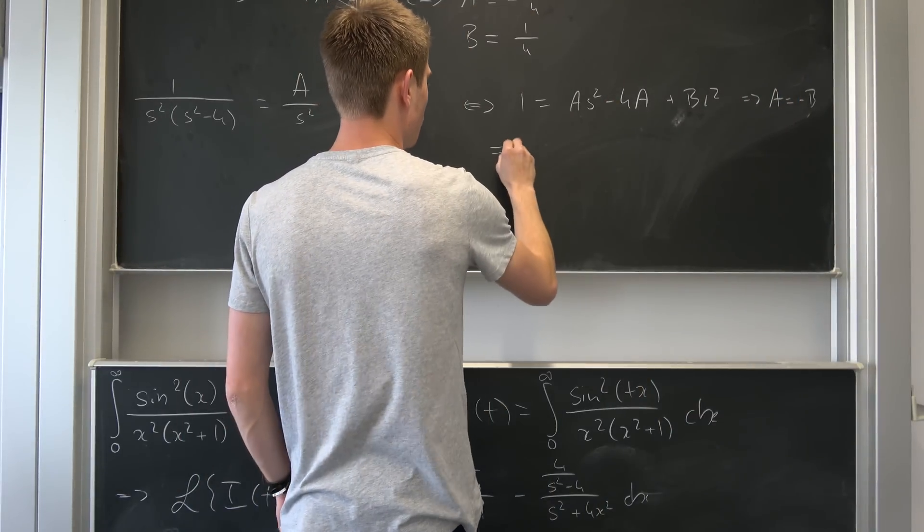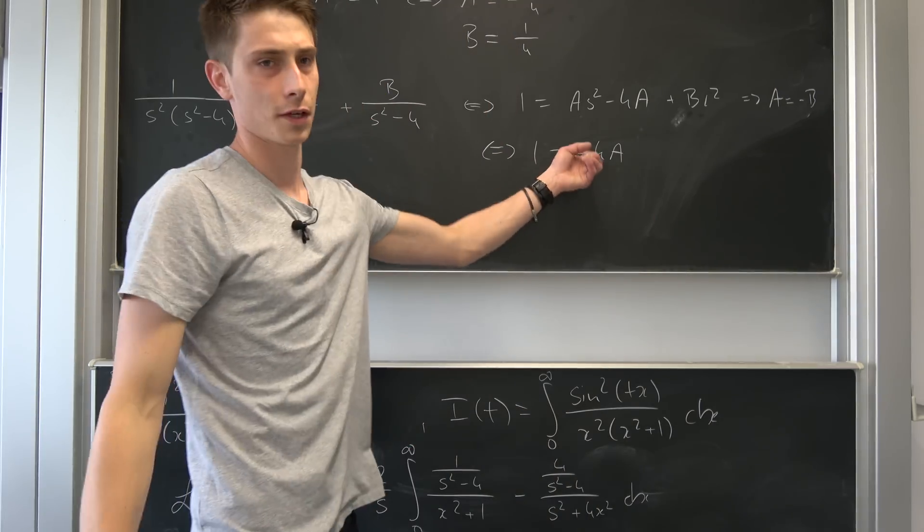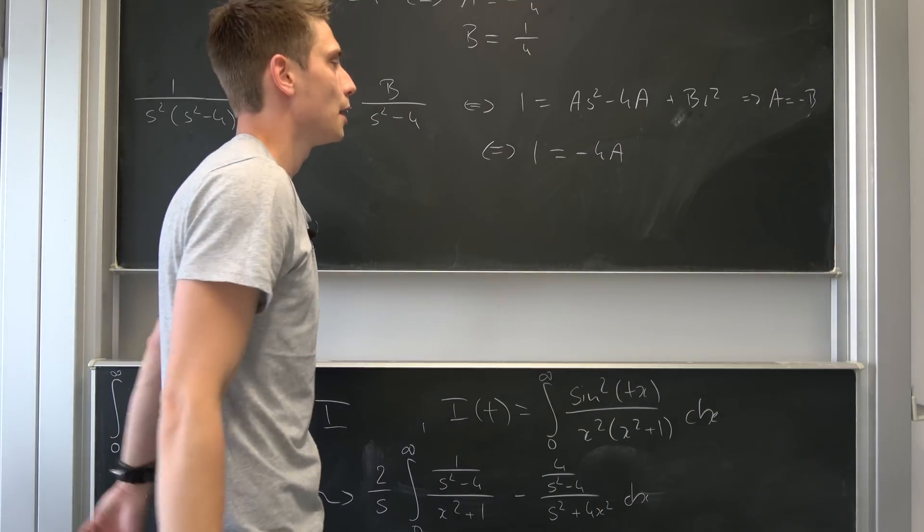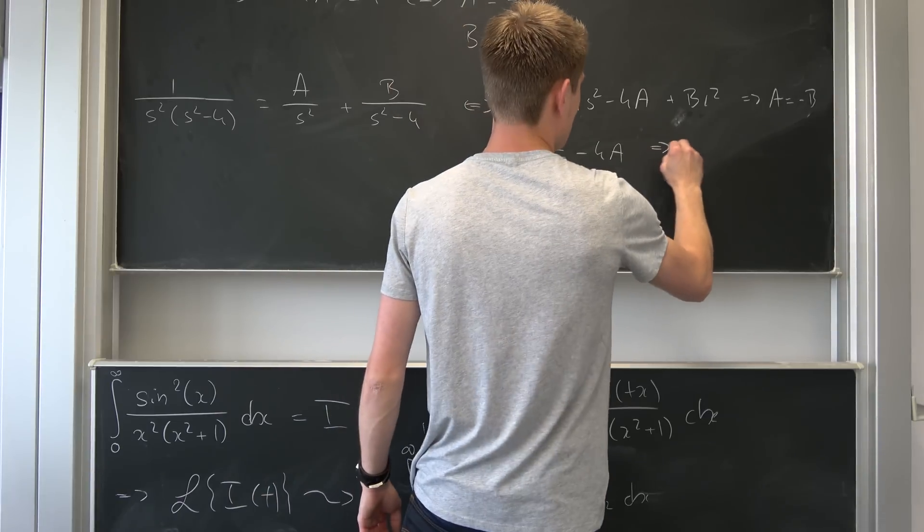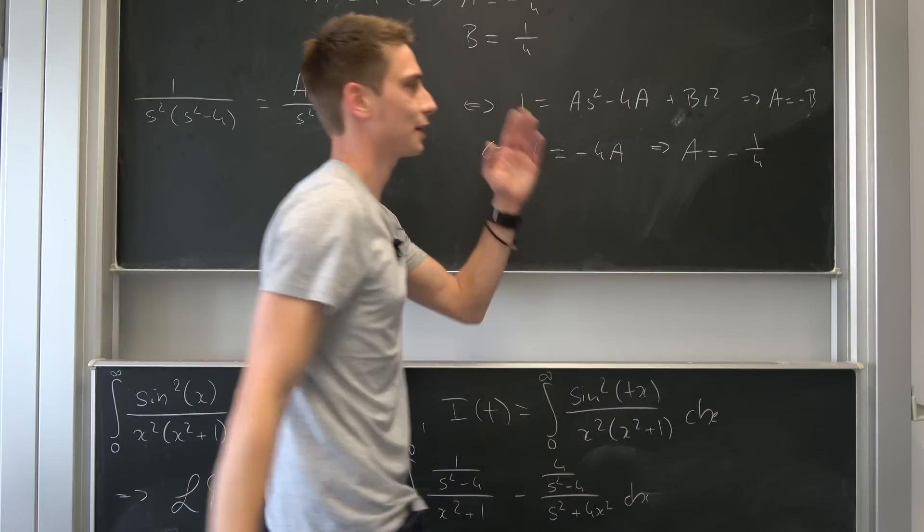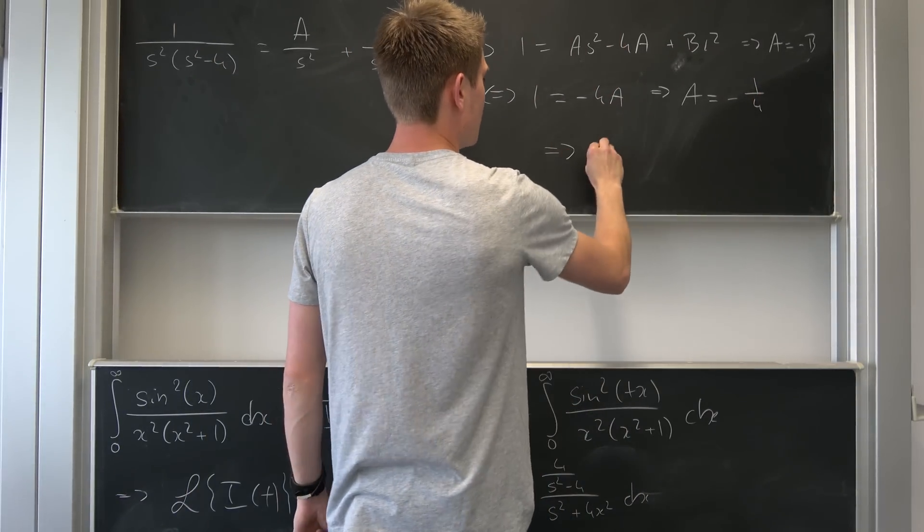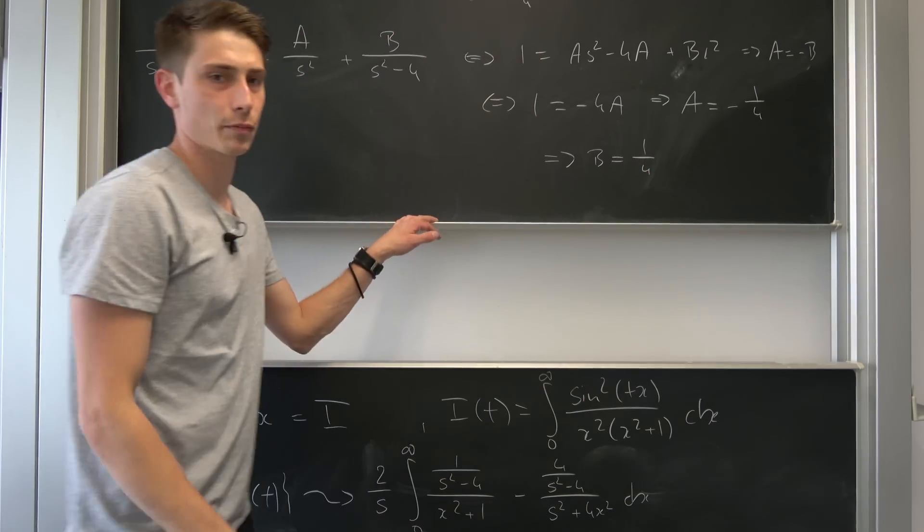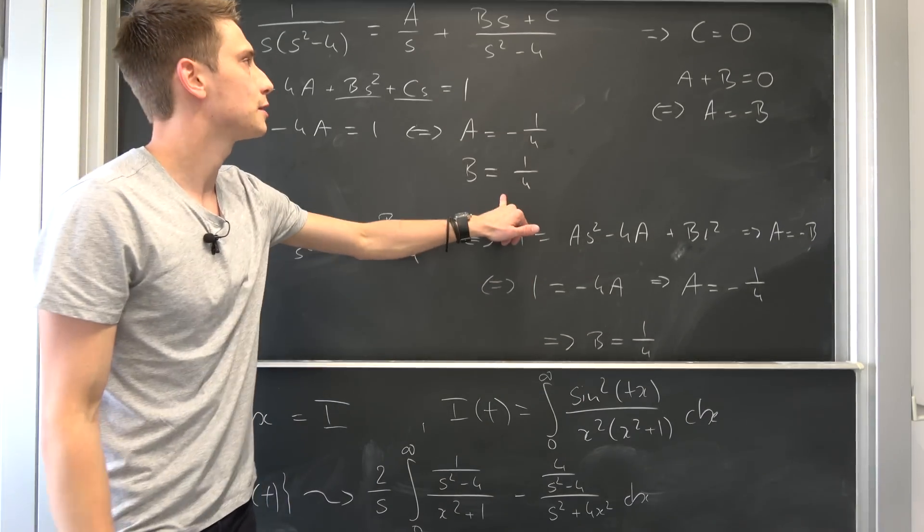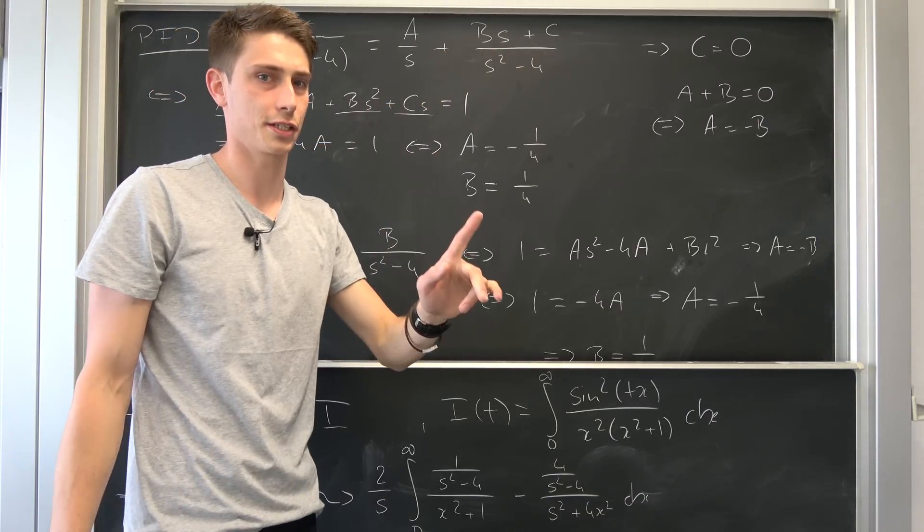Multiplying both sides by minus 1 over 4 will leave us with a equals to minus 1 over 4. Plugging this into the condition for b is going to give us that b is equal to 1 over 4. And now we can plug everything in, and don't forget up here that this b has a factor of s up here in the numerator. Don't forget that.